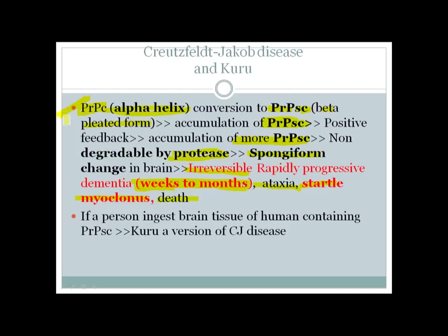This describes the sporadic form, which is the classic Creutzfeldt-Jakob disease. Kuru is actually a variant of CJD that occurs in people in Papua New Guinea and other populations where individuals ingest human brain tissue. If a person ingests human brain containing PrPSc, it leads to the disease called Kuru, which is a version of Creutzfeldt-Jakob disease.